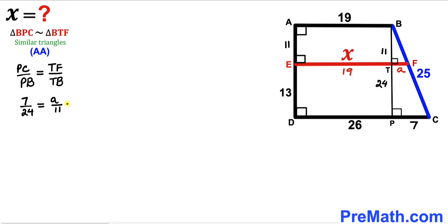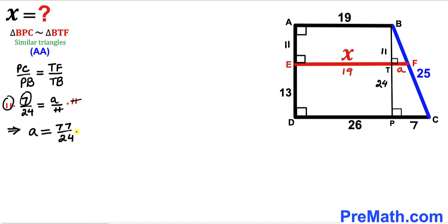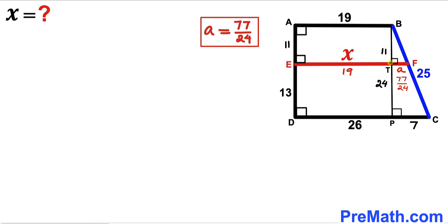Multiplying both sides by 11 to isolate a, the 11s cancel, giving us a = (11 × 7) / 24 = 77/24. So segment TF turns out to be 77/24.